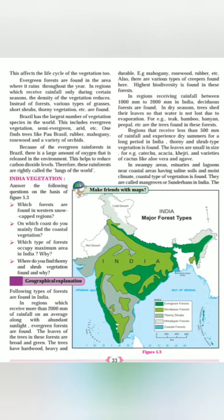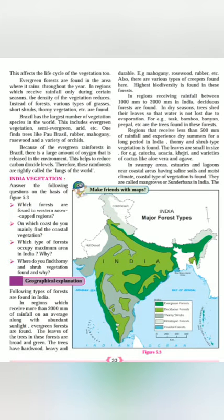The following types of forests are found in India. In regions which receive more than 200 mm of rainfall on average, along with abundant sunlight, evergreen forests are found. So wherever this condition of more than 200 mm of rainfall and abundant sunlight prevails, evergreen forests grow.